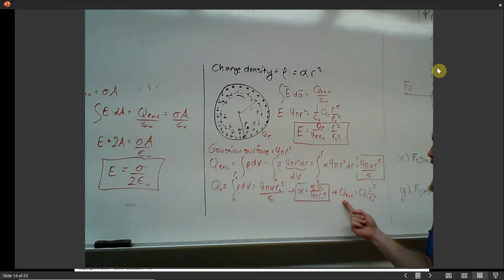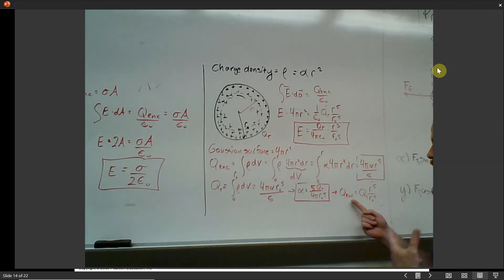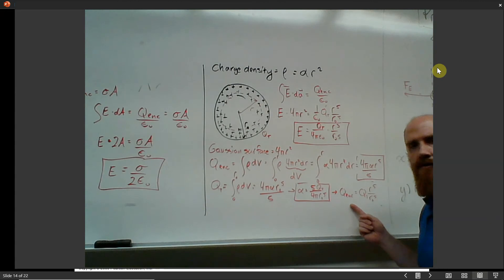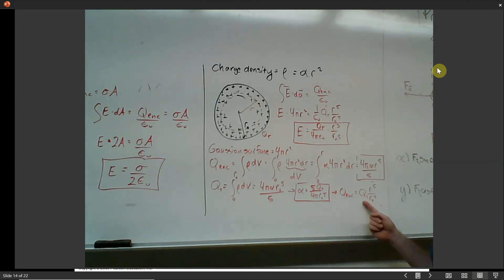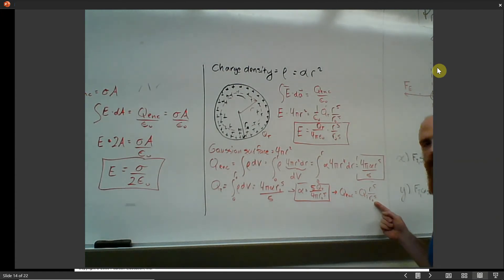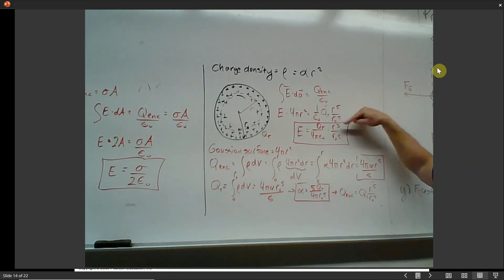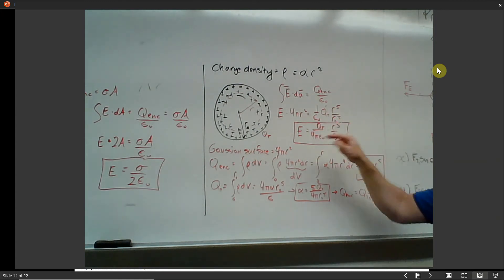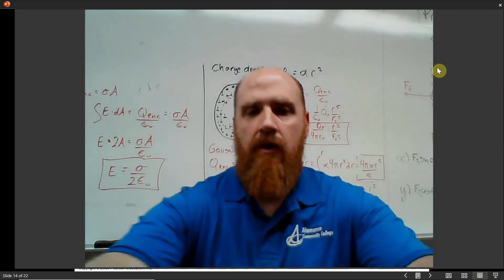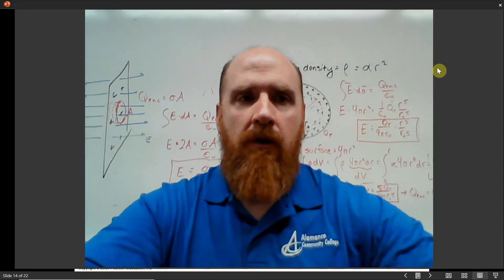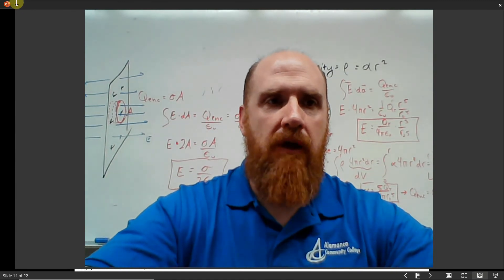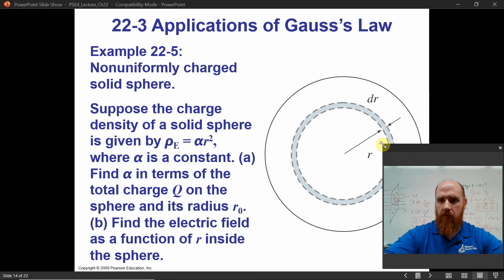If we take this alpha and plug it in, we find that the enclosed charge for any Gaussian sphere of variable radius r is q_total times r to the fifth over r-naught to the fifth. We plug that into Gauss's law — the 4πr² comes down underneath — and we get our expression for the electric field inside the sphere. I know I went through that fast, but you can always replay the video.